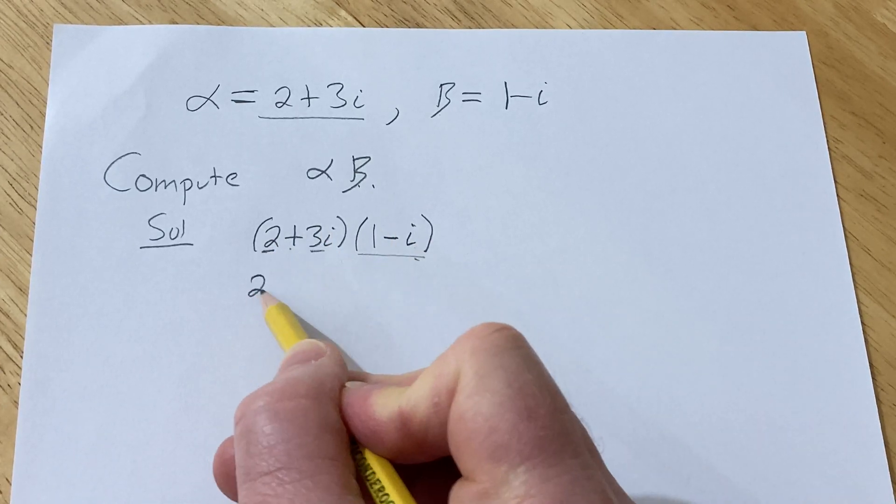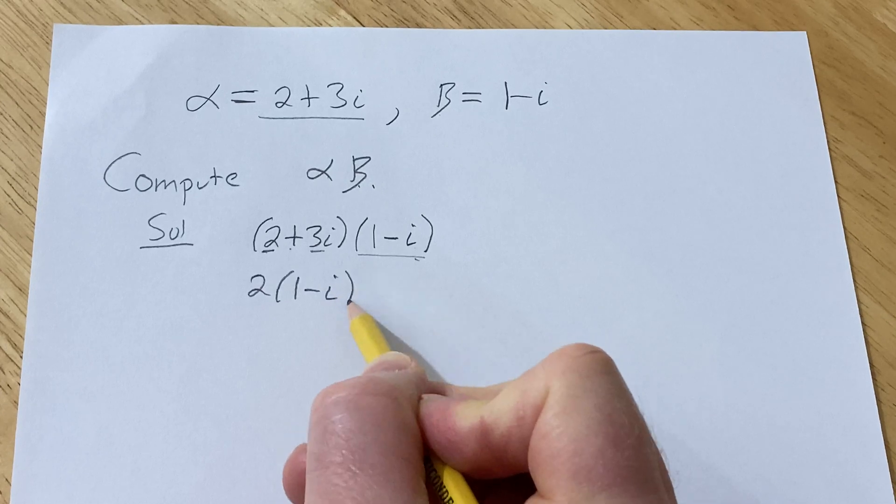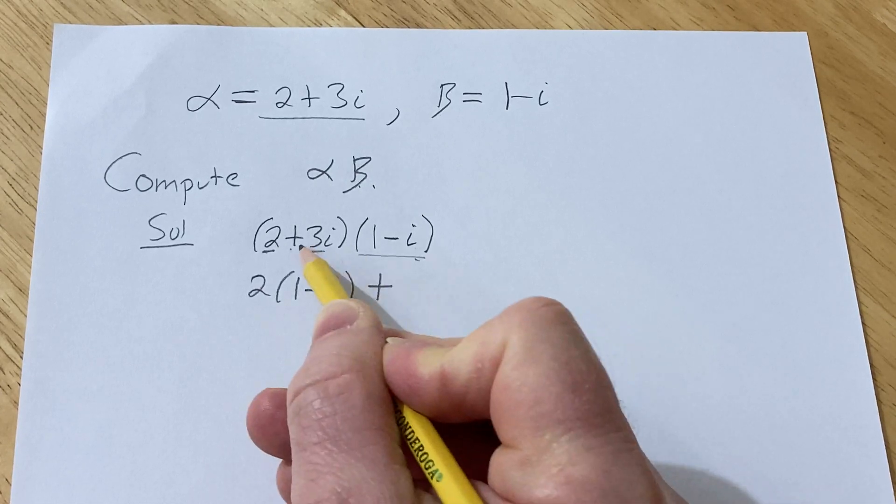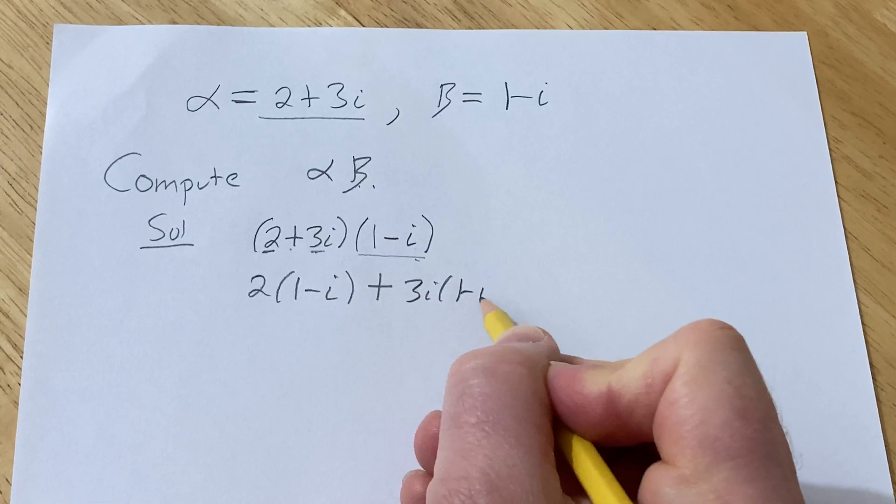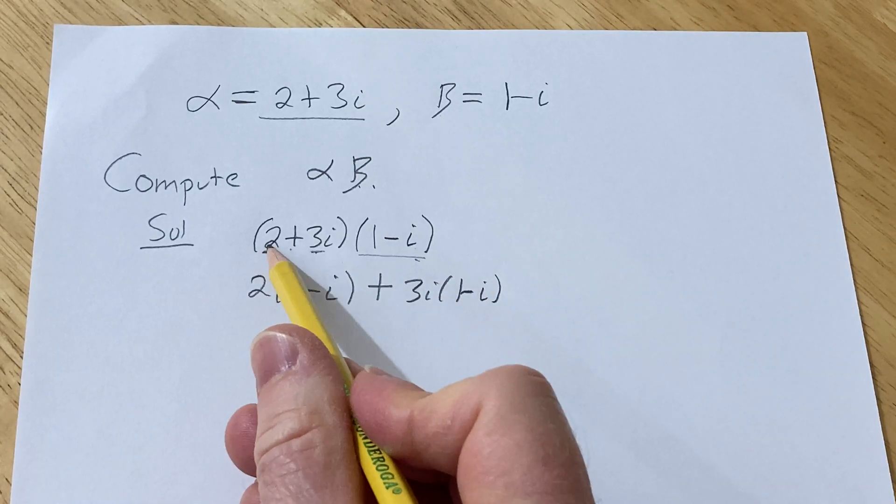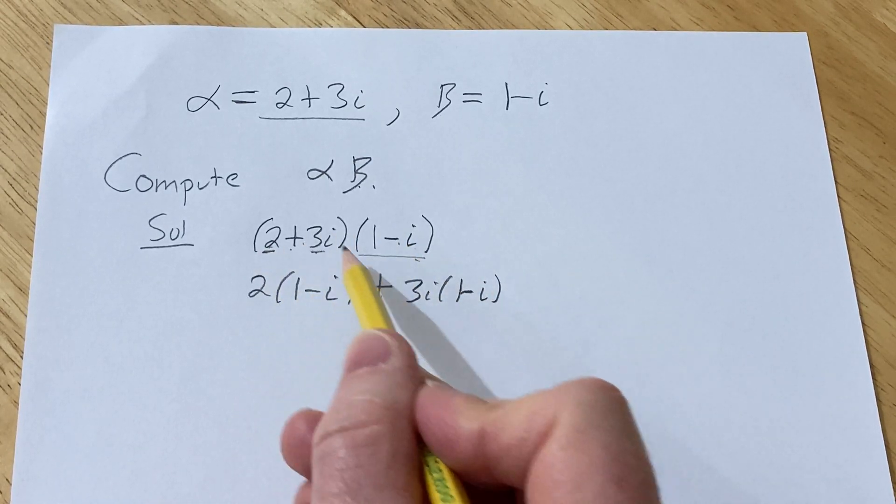So it's 2 times 1 minus i. Plus, that's the plus sign there, and then 3i times 1 minus i. Okay, so it's 2 times that, plus, that times that.